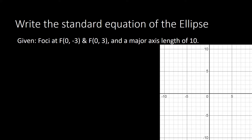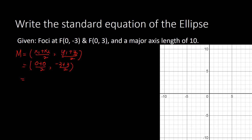Now for the next problem, we have foci at (0, −3) and (0, 3), and a major axis length of 10. First, to find the center, we use the midpoint formula because the center is always the midpoint between the two foci. The midpoint formula is ((X₁ + X₂)/2, (Y₁ + Y₂)/2). Plugging in: (0 + 0)/2 = 0, and (−3 + 3)/2 = 0. So the center is at (0, 0).